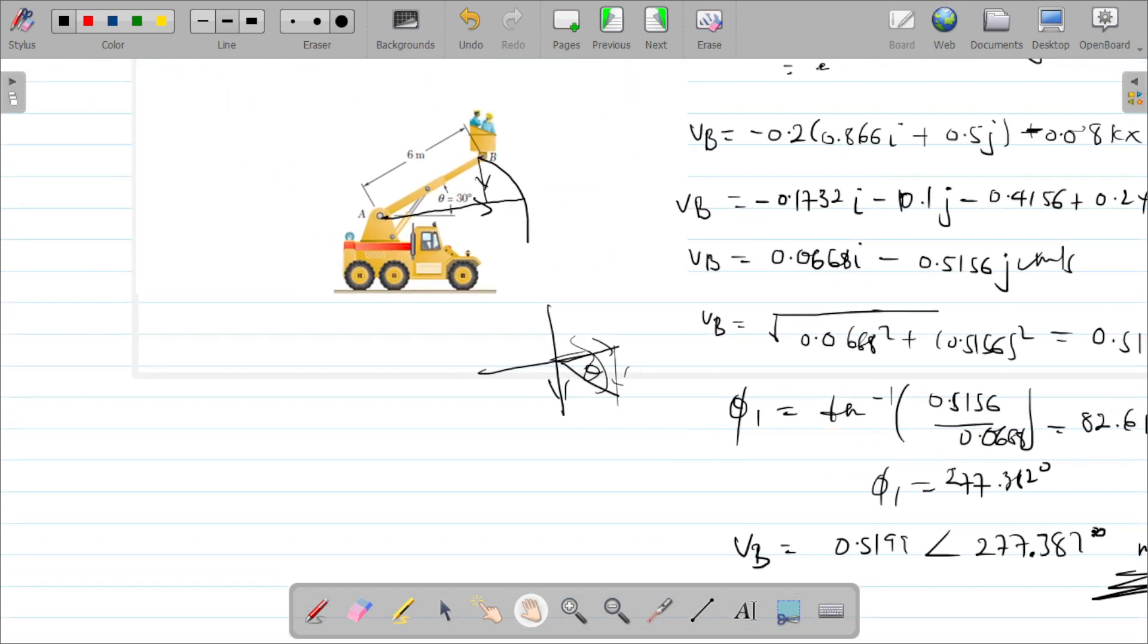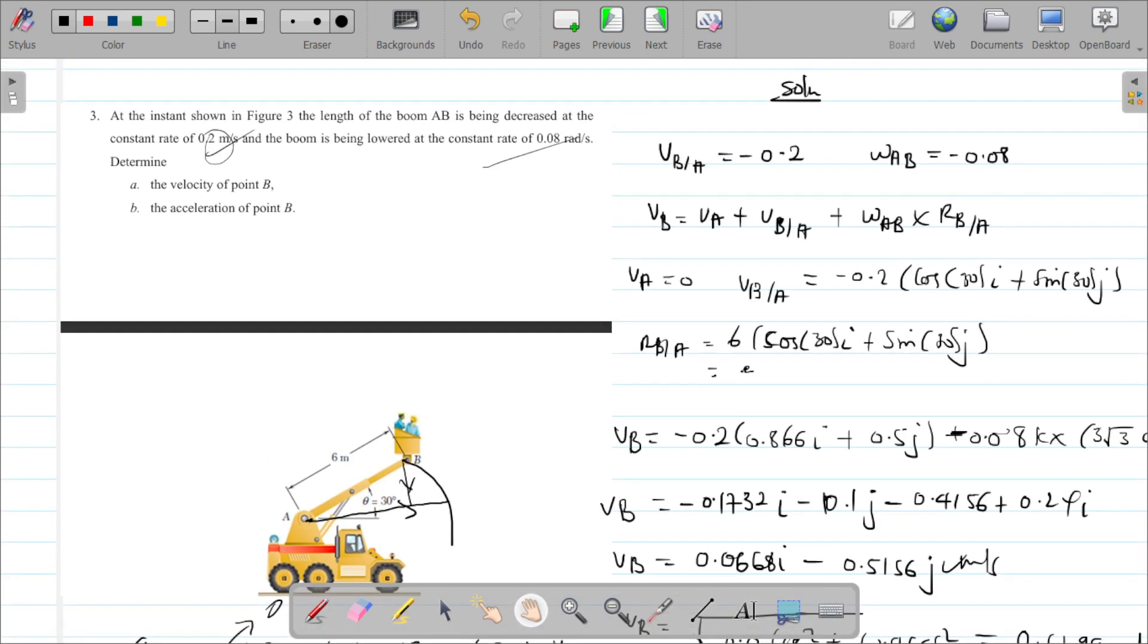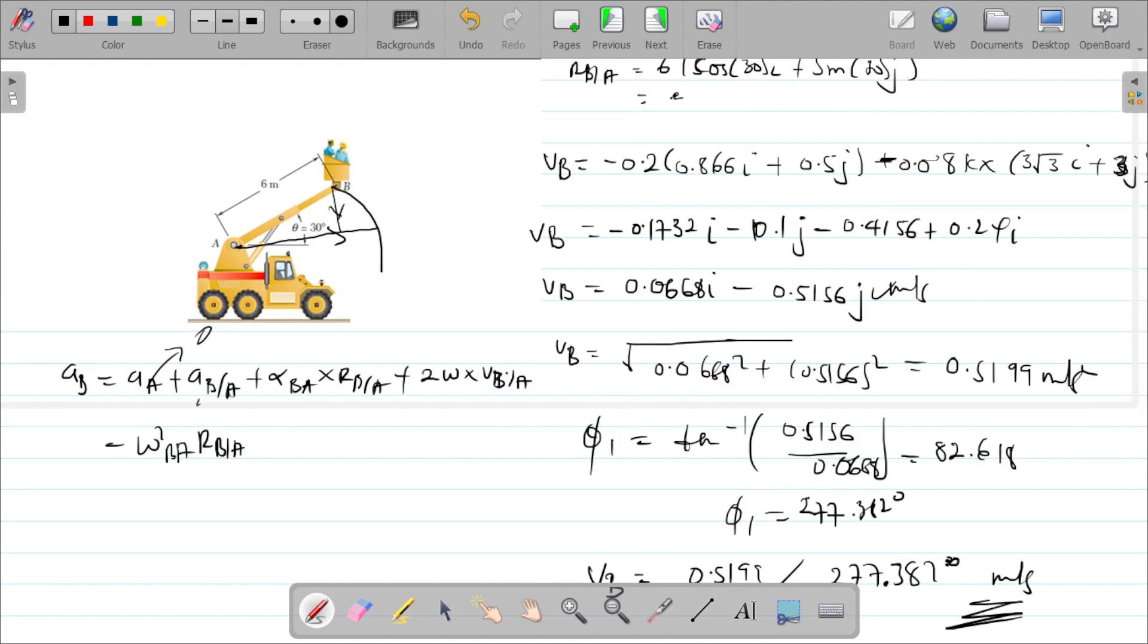Next is the acceleration, following the same procedure. a_B equals a_A plus a_B relative A plus alpha_BA times r_B relative A plus 2 omega cross v_B relative A minus omega_AB squared times r_B relative A. Now a_A is fixed so this is zero, the sliding velocity was constant so sliding acceleration is zero, and the angular velocity is constant so this is also zero.